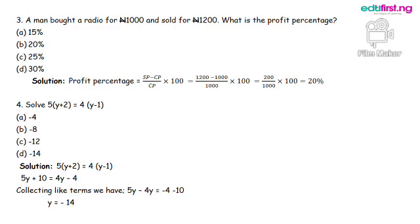A man bought a radio for 1,000 naira and sold for 1,200. What is the profit percentage? Solution: Profit percentage equals selling price minus cost price all over cost price multiplied by 100 equals 1,200 minus 1,000 all over 1,000 multiplied by 100. We have 200 over 1,000 multiplied by 100, giving us 20 percentage. And option B is the correct answer.